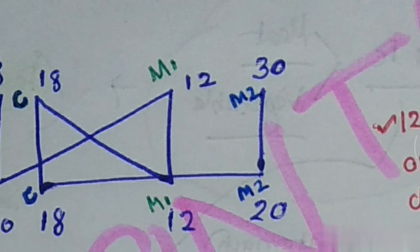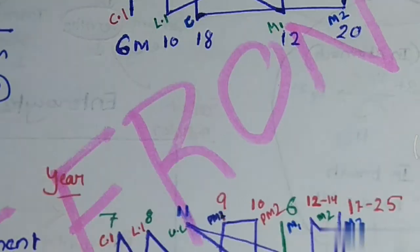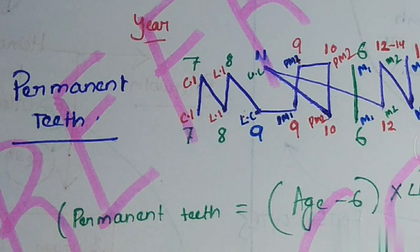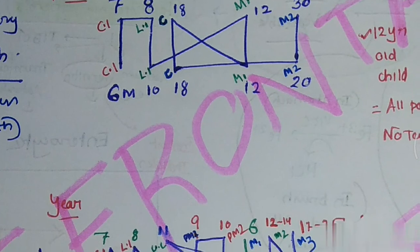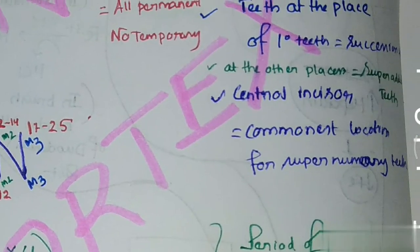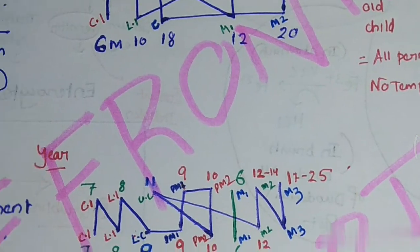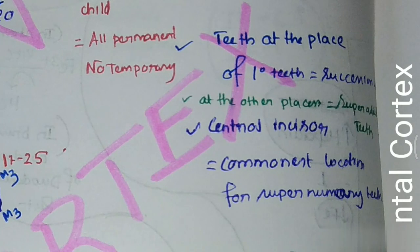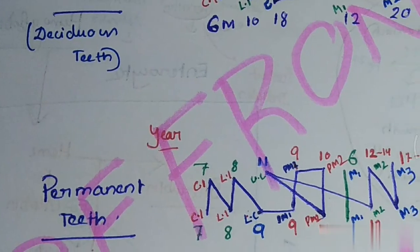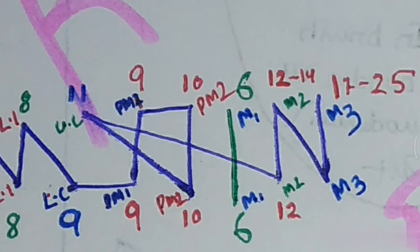Permanent teeth will appear at two locations: at the place of deciduous teeth — these are named succession teeth — and at other places beyond the deciduous teeth, which are known as superadded teeth. Now, the time sequence for permanent teeth follows a specific pattern.